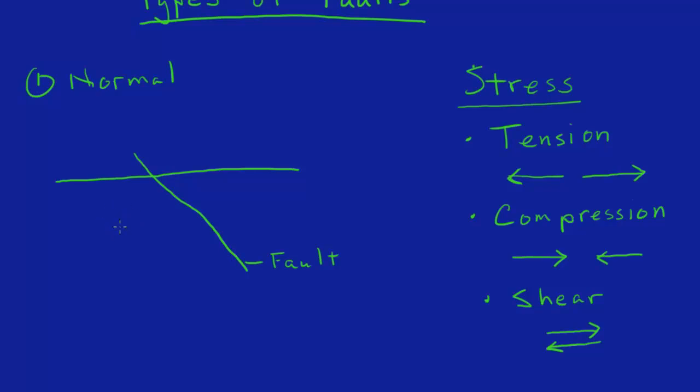Now, the portion underneath the fault line, if you think of the fault line as like a slide, you think of it as a slide as a person kind of sliding down the slide. Underneath the slide is called the foot wall, and above the slide is the hanging wall.